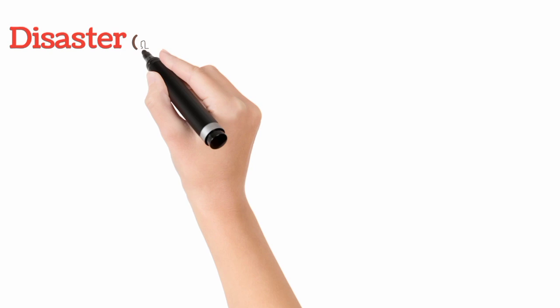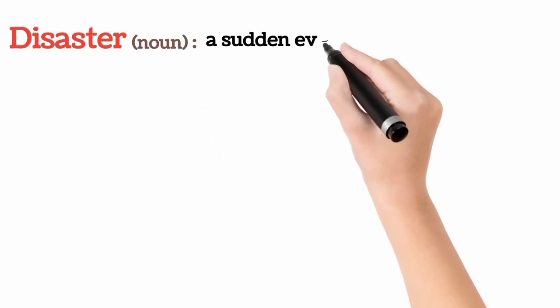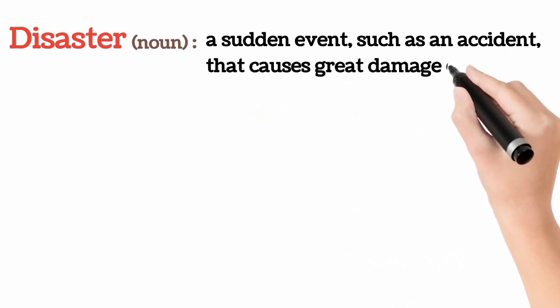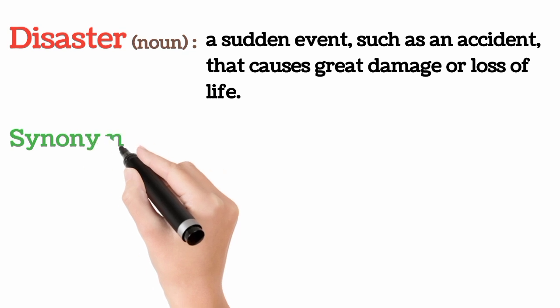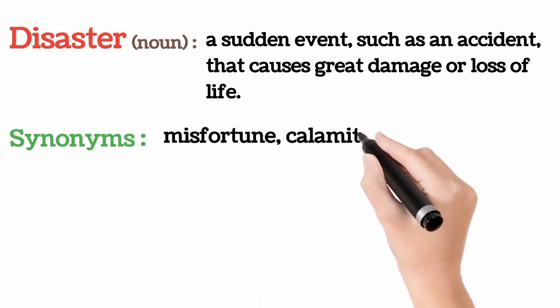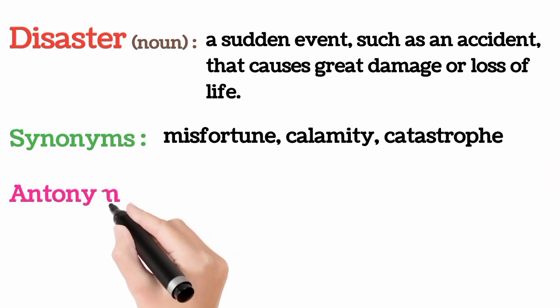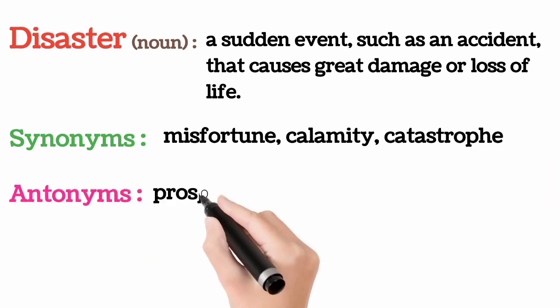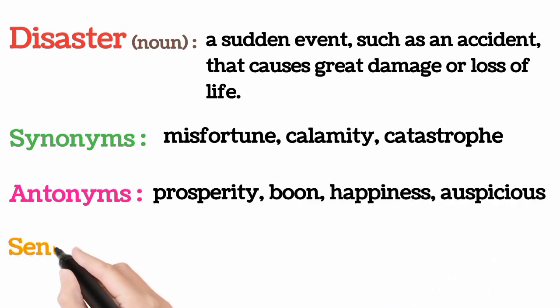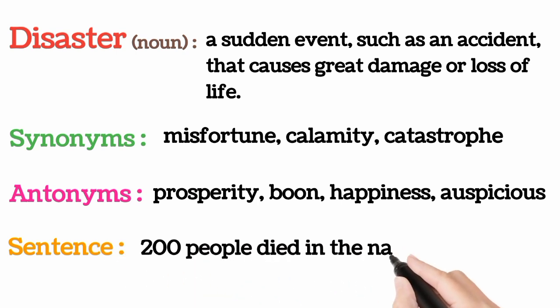Disaster, it's a noun, which means a sudden event such as an accident that causes great damage or loss of life. Synonyms: misfortune, calamity, catastrophe. Antonyms: prosperity, boon, happiness, auspicious. 200 people died in the natural disaster.